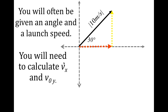Notice I said vx instead of initial velocity in the x direction because in the x direction, the acceleration is zero — the velocity is constant for a projectile. So initial velocity in x and final velocity in x are the exact same thing. However, initial velocity in the y direction is going to be different than the velocity in y at some other point.